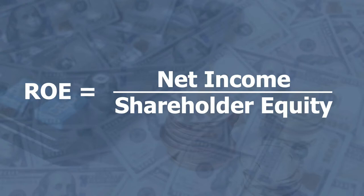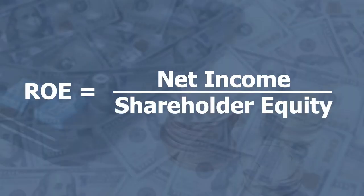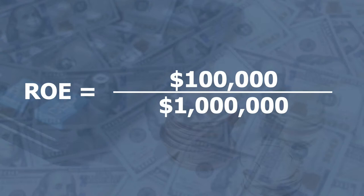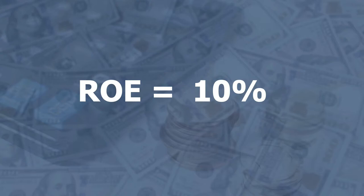To find the return on equity, we take net income divided by shareholder equity. For example, if $1 million has been invested by shareholders and the profit for that year is $100,000, we take 100,000 divided by 1 million, which gives us a return on equity of 10%.